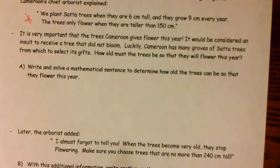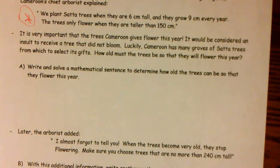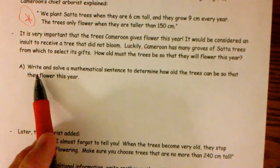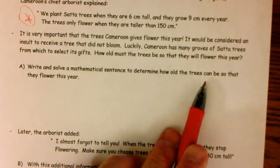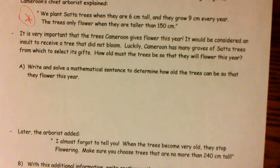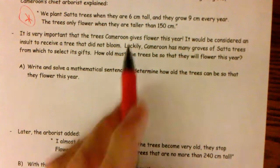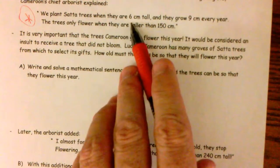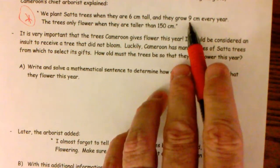All right. Well, they've told us up here when they flower. They flower when they're 150 centimeters tall. So when will they be 150 centimeters tall? It wants me to write and solve a mathematical sentence to determine how old the trees can be so that they will flower. So any trees that are over 150 centimeters will flower. They are six centimeters tall when they are planted, and they grow nine centimeters each year.